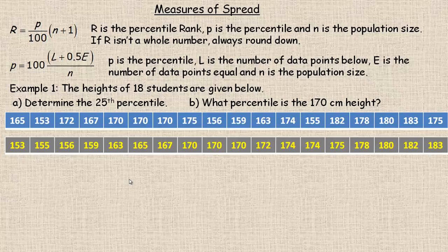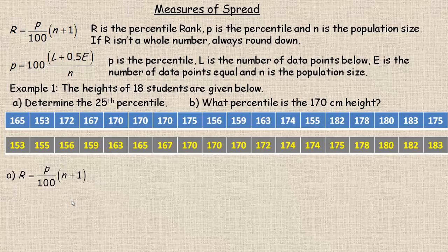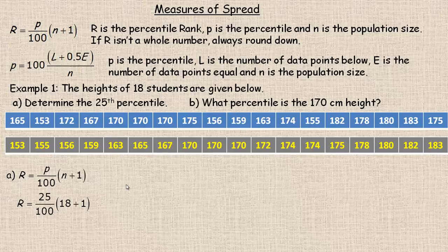The list in order has a smallest number of 153 and a highest number of 183. To calculate the 25th percentile we use the first formula. P is 25 and N is 18, so putting those in: it's 25 divided by 100 times 19, which gives us R = 4.75.